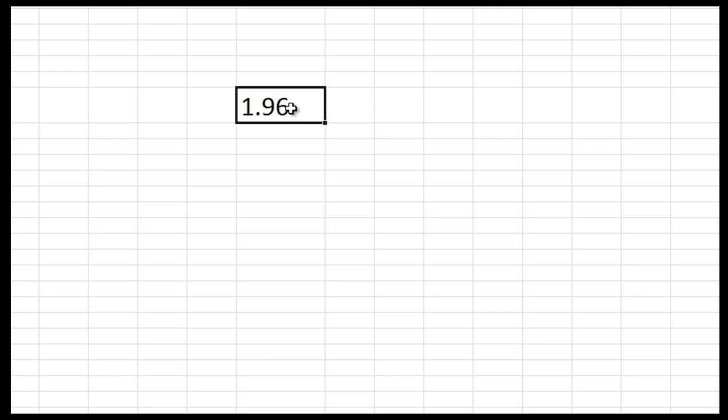And once you get to sample sizes of a couple of hundred, it really does get very close. And clearly, once you're in the thousands, there's very little difference between the z distribution and the t distribution.